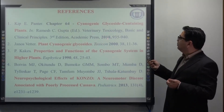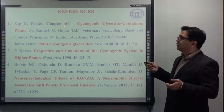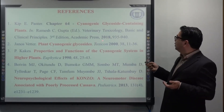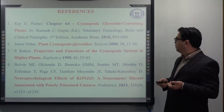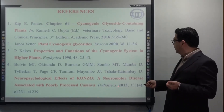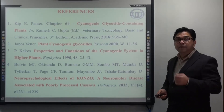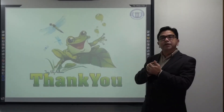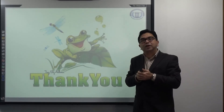These are some of the references from which I have prepared the entire chapter. One of the latest references is a chapter on cyanogenic glycoside-containing plants in Chapter 64 of a 2018 Academic Press Elsevier publication. There are many other references, including a good reference about Konzo published in a pediatrics journal in 2013. With this, I have finished my lecture and the whole chapter of cyanogenic glycosides. Thank you for your attention.